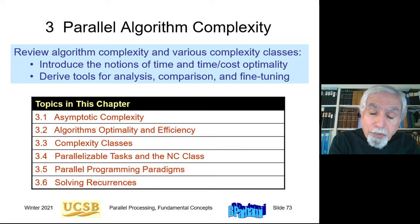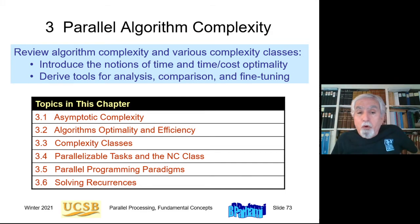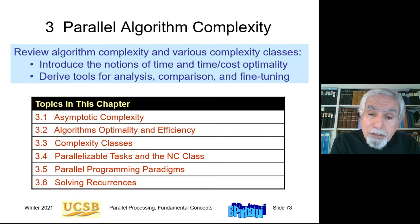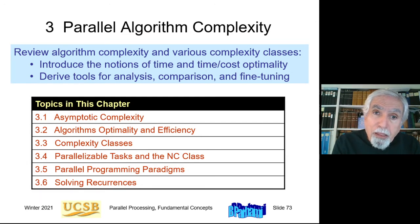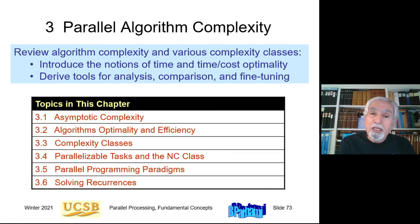Hello and welcome to lecture 3 for the course ECE 254b Parallel Processing. In this lecture I will cover chapters 3 and 4 in the textbook, with more time spent on chapter 3, which provides tools to analyze the complexity of parallel algorithms and algorithms more generally. We review notions of algorithm complexity and various complexity classes, introduce the notions of time and cost optimality, and derive tools for analysis, comparison, and fine-tuning of algorithms in parallel applications.